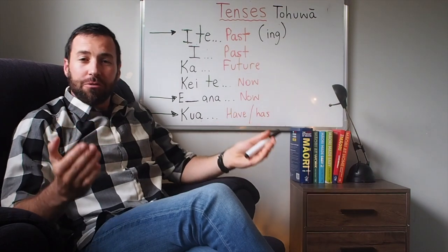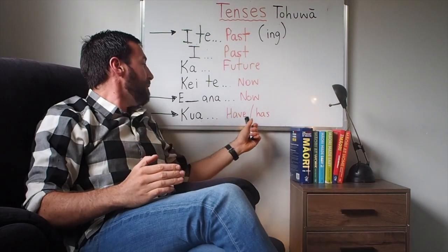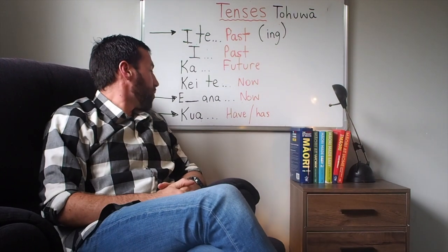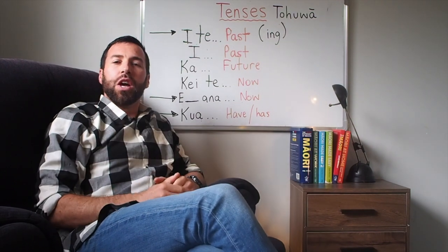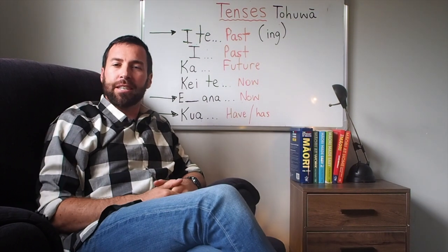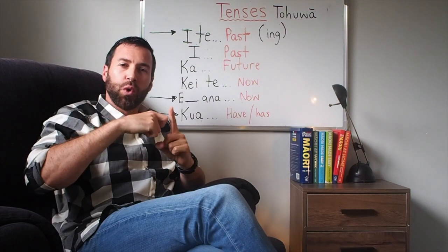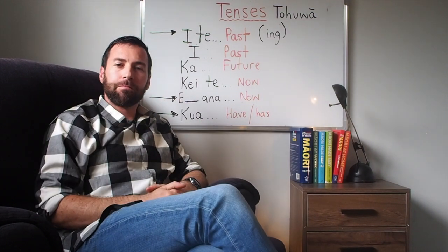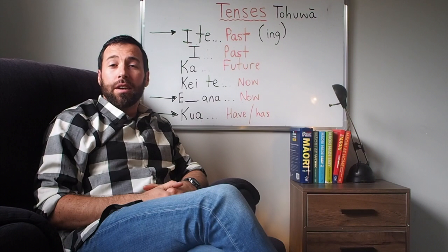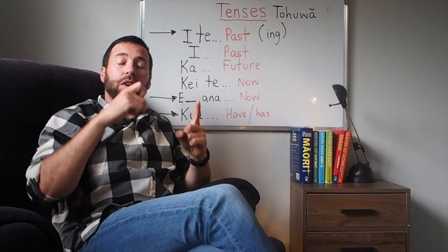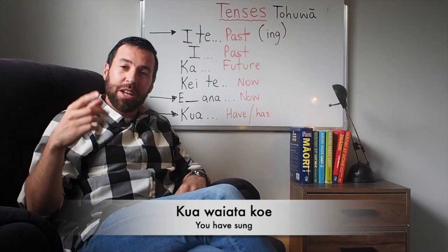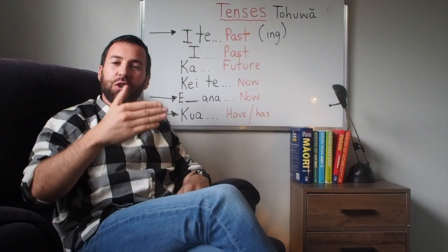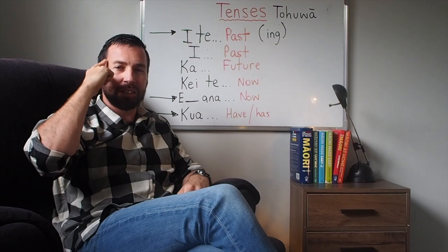Kua. Generally speaking, have or has — if you strike that in an English sentence, you'll resort to kua. For example, 'You have eaten': kua, kai, koe. 'You have sung': kua, waiata, koe. Kapai. Repetition, repetition until it sinks into the pīnati.